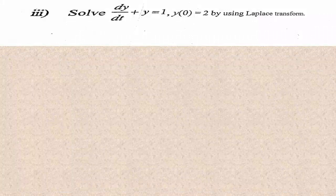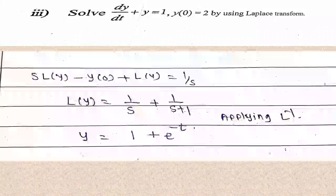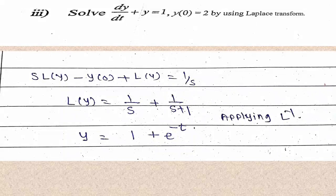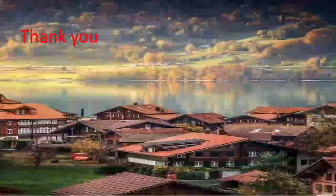Solve dy/dt + y = 1 with y(0) = 2 using Laplace transform. Taking the transform: sL{y} - y(0) + L{y} = 1/s, so (s+1)L{y} = 1/s + 2, giving L{y} = 1/(s(s+1)) + 2/(s+1). Applying the inverse Laplace transform: y = L⁻¹{1/s} + L⁻¹{1/(s+1)} = 1 + e^(-t). Thank you.